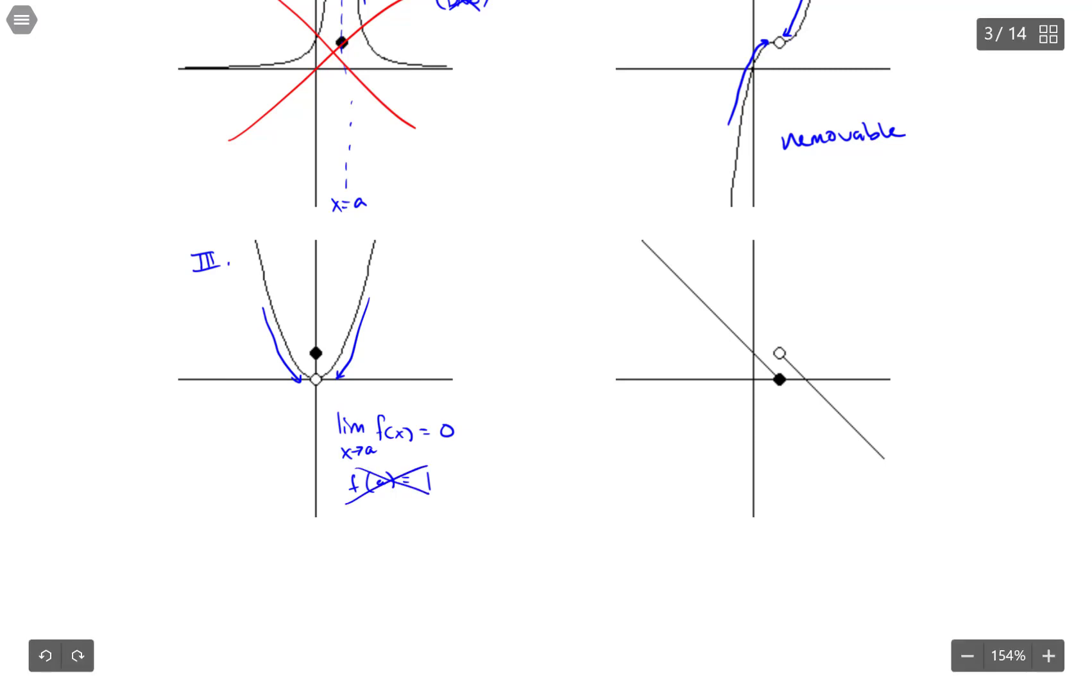And so the limit exists, but it's not equal to this value. So that is a removable discontinuity. And it doesn't really matter what's happening there. It's really just that this limit exists, and that makes it removable.